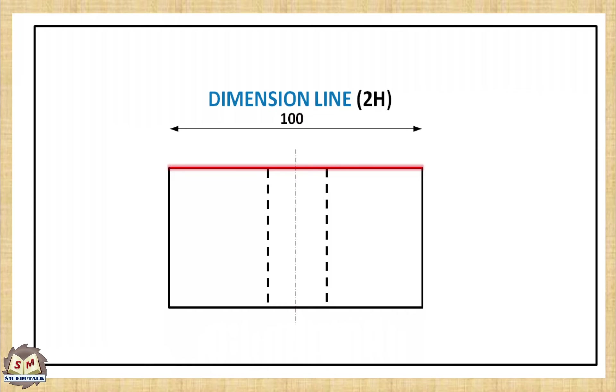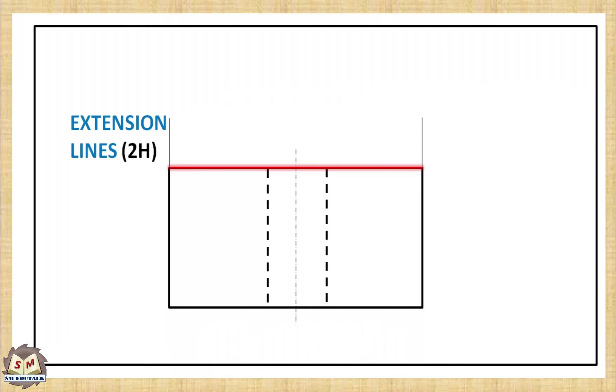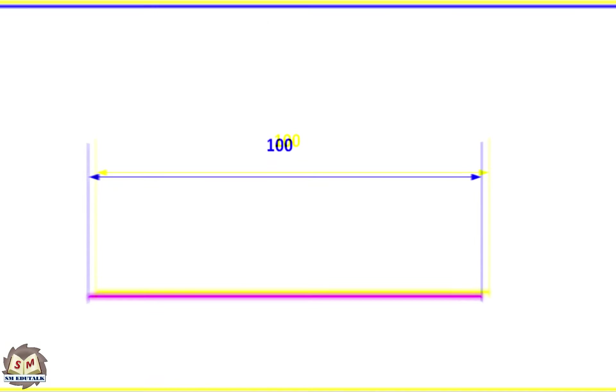To make it happen, you have to follow two conditions. First condition, draw extension lines at the end of the object line which are perpendicular to the object line. Second condition, draw dimension line always parallel to the object line. Usually, 10mm gap should be maintained between the dimension line and the object line. Also, extension lines should extend above 3mm beyond the dimension line.